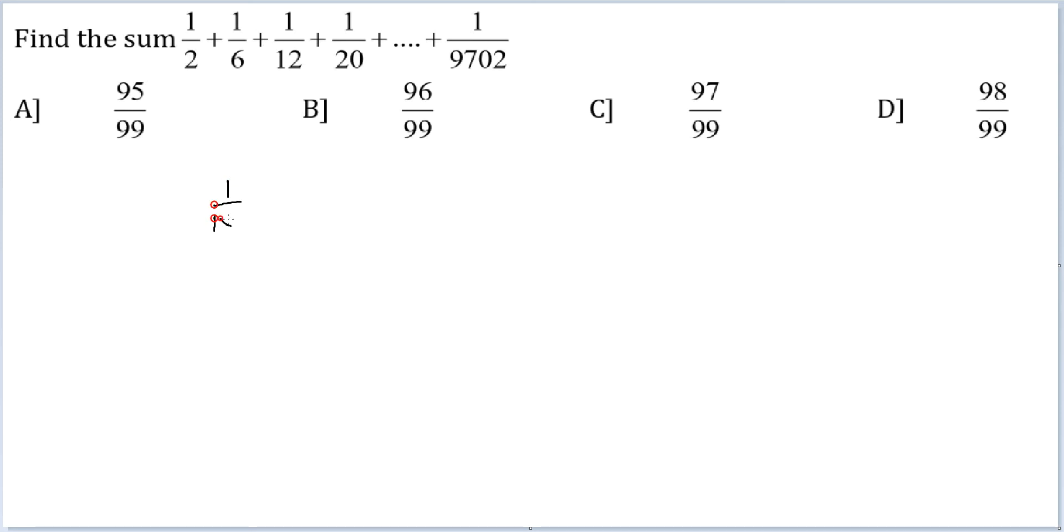This is 1 by 1 into 2, plus 1 by 2 into 3, plus 1 by 3 into 4, and you have gone on and on up until 1 by 9,702. So this is very close to 10,000, so it should be close to 100 as well. So 99 into 98.